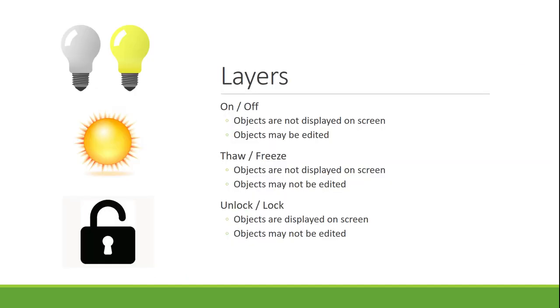Here are the rules for layer states. If a layer is turned on or off, you can see it on screen or you can't. Freeze and thaw works like on and off, but with an additional restriction — you cannot edit an object that is frozen, so it's invisible and unchangeable. If a layer is just off, it's invisible but you can still change it. Locked means you can still see it on screen, but you cannot change it at all.